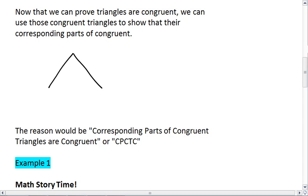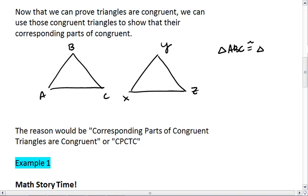For example, if we were able to show by one of our five ways that triangle ABC was congruent to triangle XYZ, we then would know that angle A is congruent to angle X, angle C is congruent to angle Z, and angle B is congruent to angle Y.